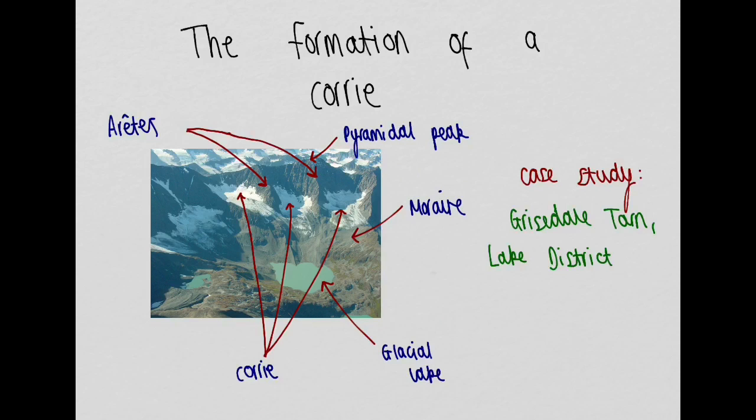A good case study for the formation of a corrie would be Grisedale Tarn, which is located in the Lake District.